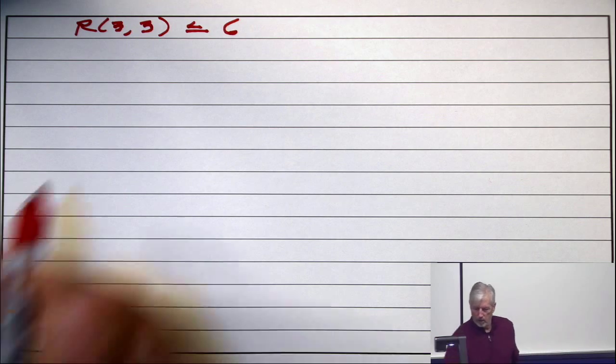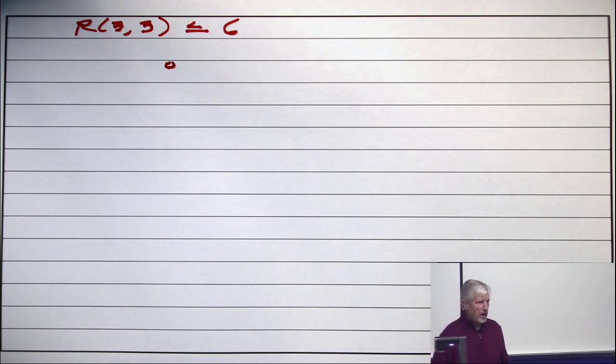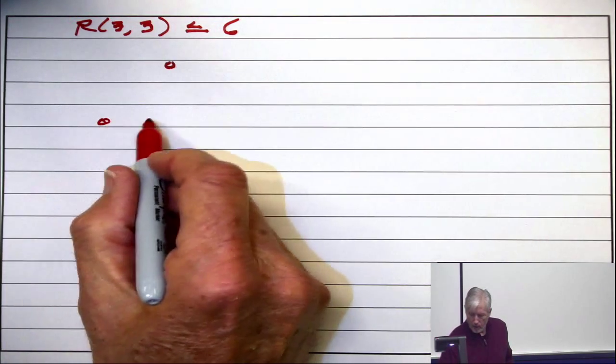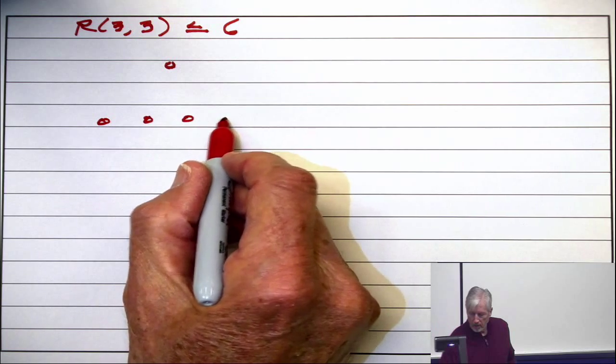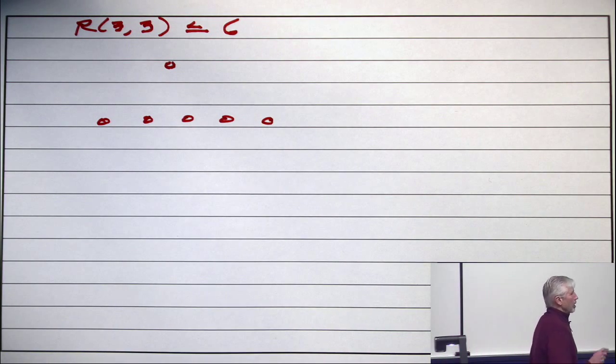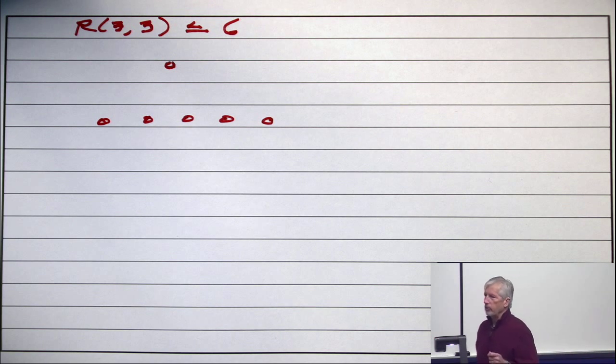And here's the proof. Take any vertex and look at the neighbors. Look at the other 5. There are 5 other vertices. By pigeonhole, either there are 3 of them that are adjacent or there are 3 of them that are non-adjacent.